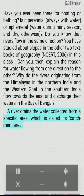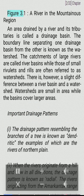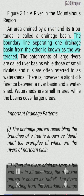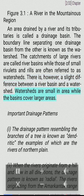A river drains the water collected from a specific area, which is called its catchment area. An area drained by a river and its tributaries is called a drainage basin. The boundary line separating one drainage basin from the other is known as the watershed. The catchments of large rivers are called river basins, while those of small rivulets and rills are referred to as watersheds. Watersheds are small in area while basins cover larger areas.